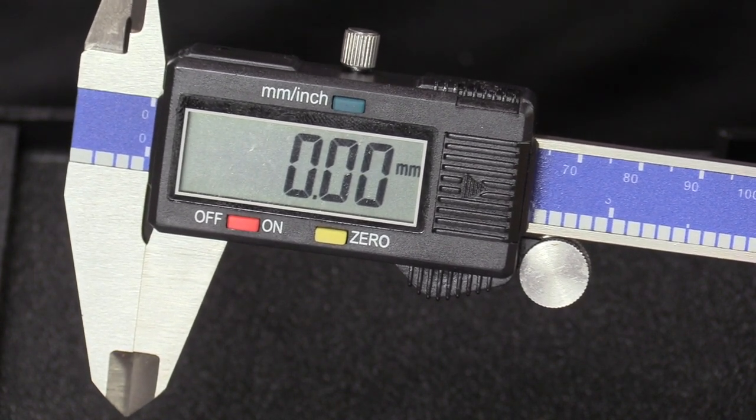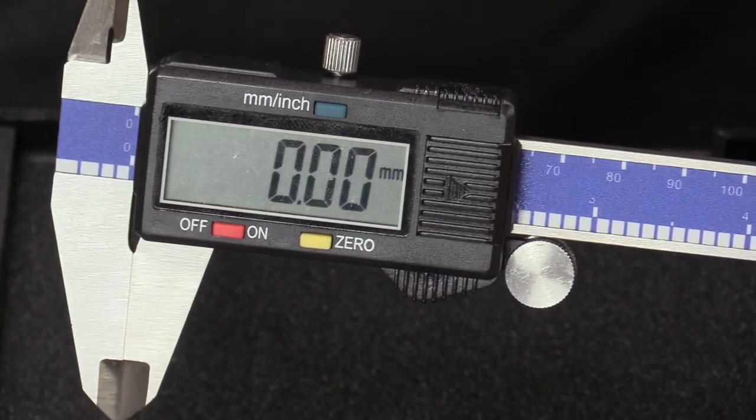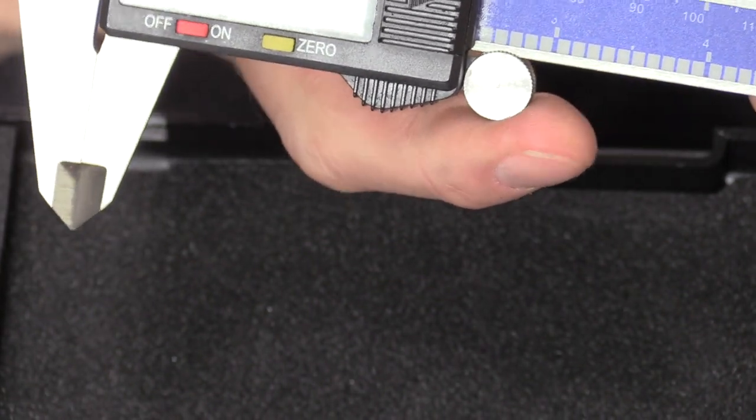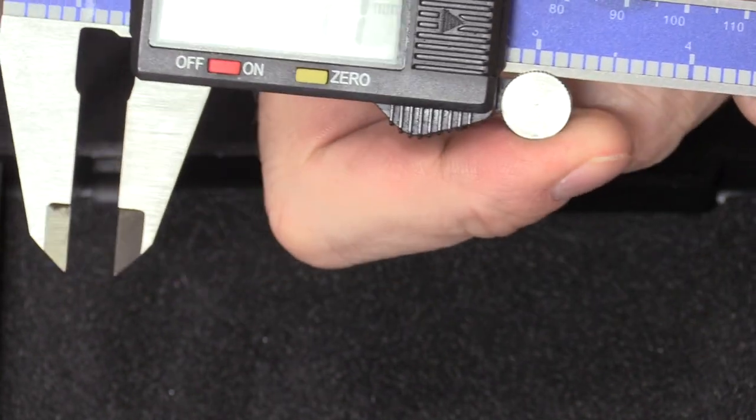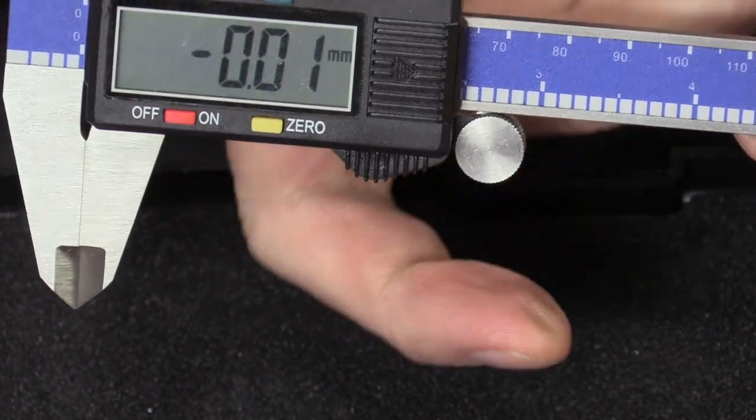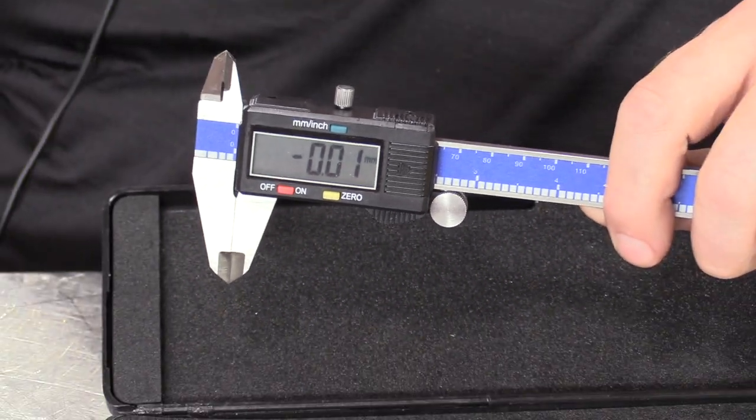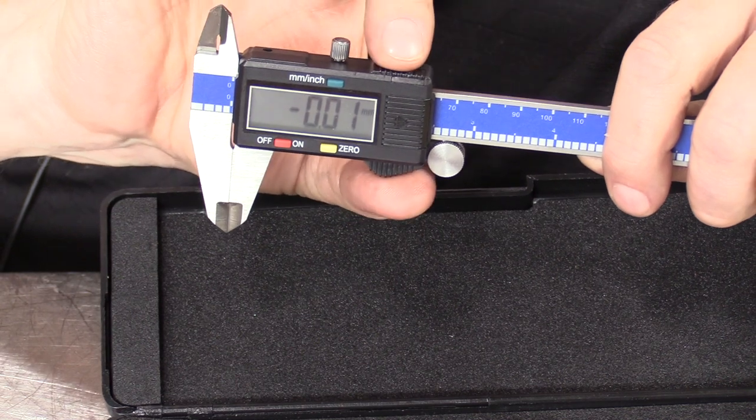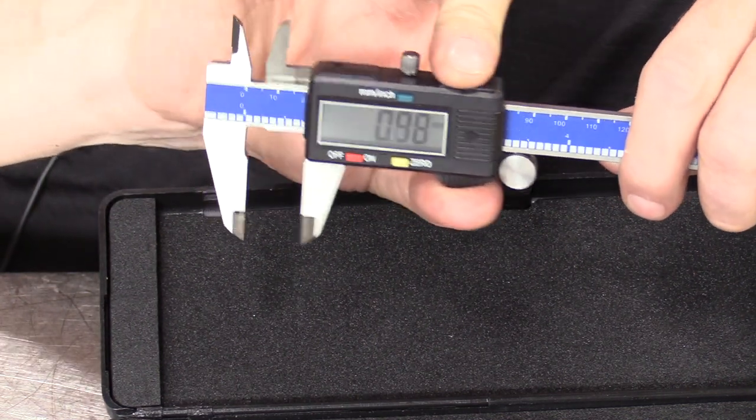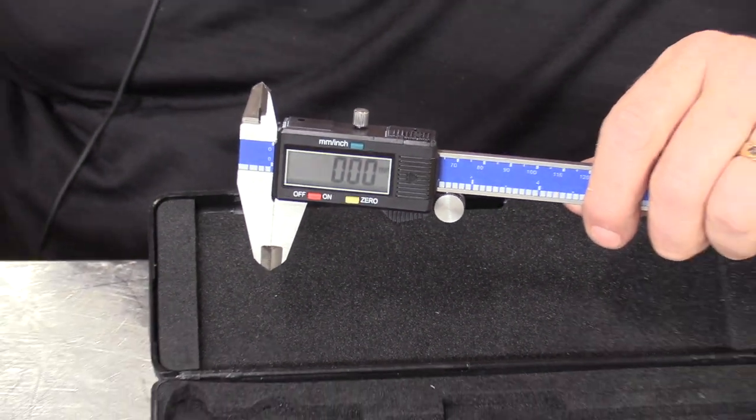This digital caliper has a thumb screw right here where we can roll open and close the jaws of the digital caliper for fine incremental movements. Or it has some little knurled edges here where we can pull the entire unit back and forth to open and close it if we're making a big measurement.